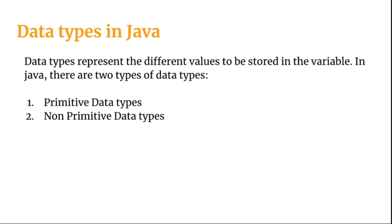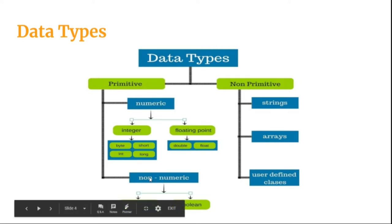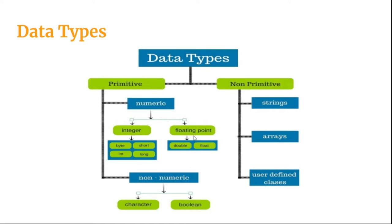Let's discuss both of them in detail. Before going into the details of primitive and non-primitive, we just see what are the different types which are present inside both of the categories. In primitive, we have got two categories. The first one is numeric and the second one is called non-numeric values. In numeric, we have got integers and floating point data types.